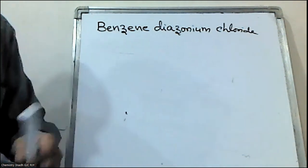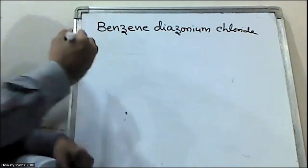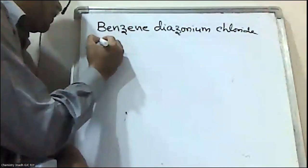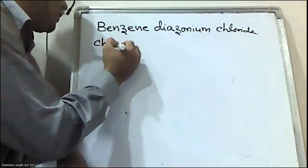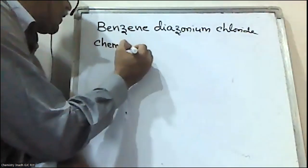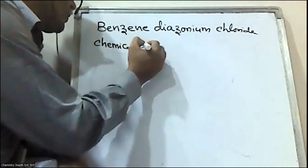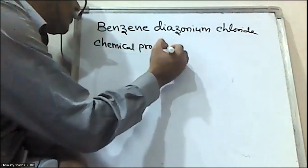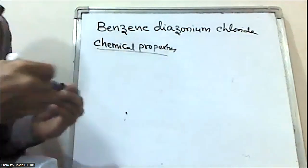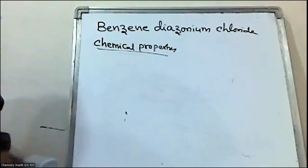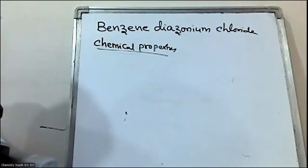Now let us discuss the chemical properties of benzene diazonium chloride.